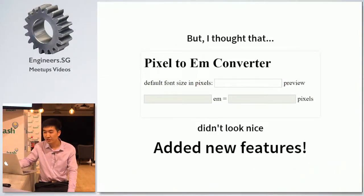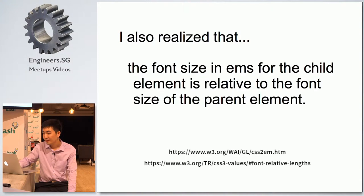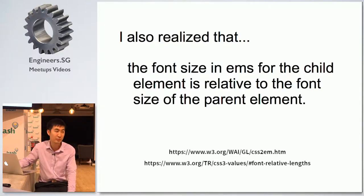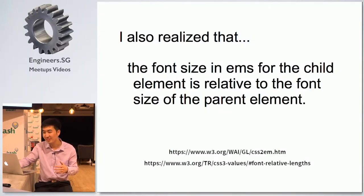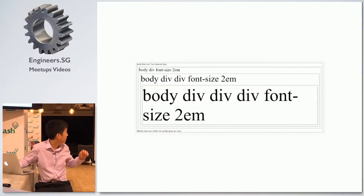The solution was to make the input type equal to text. I also realized that the font size in ems for the child element is relative to the font size in pixels of the parent element — and this is how you convert from pixels to ems. I made a test to check: all the text is set to 2ems.